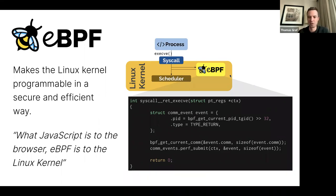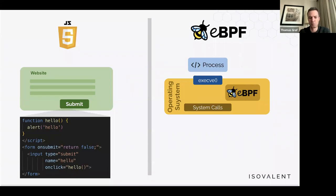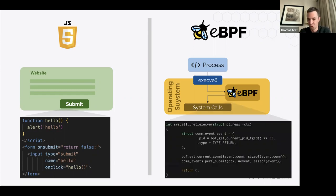JavaScript makes the browser programmable; eBPF makes the Linux kernel programmable — conceptually the same, though the implementation, performance, and system level they operate at are very different. On the left you have a JavaScript program that runs code when a website user clicks submit. This is very similar for eBPF: when a process makes a system call — for example, the exec system call — we can run an eBPF program. They've unlocked a similar amount of innovation, though the level and system level they operate at is widely different.